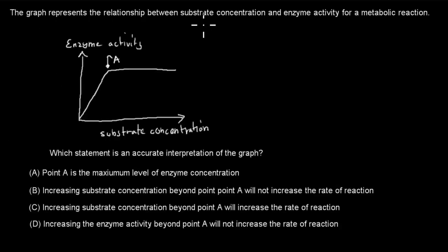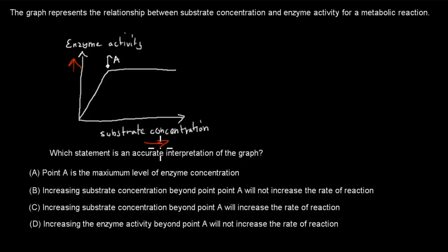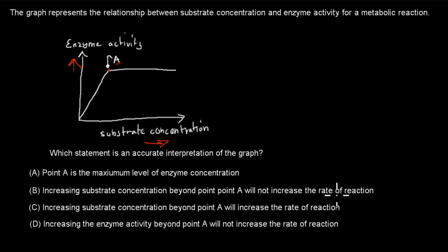The next question: The graph represents the relationship between substrate concentration and enzyme activity for a metabolic reaction. Enzyme activity is on the y-axis, substrate concentration on the x-axis, and point A marks a specific location on the graph. Which statement is an accurate interpretation? A. Point A is the maximum level of enzyme concentration. B. Increasing the substrate concentration beyond point A will not increase the rate of reaction. C. Increasing the substrate concentration beyond point A will increase the rate of reaction. D. Increasing the enzyme activity beyond point A will not increase the rate of reaction. Pause the video.